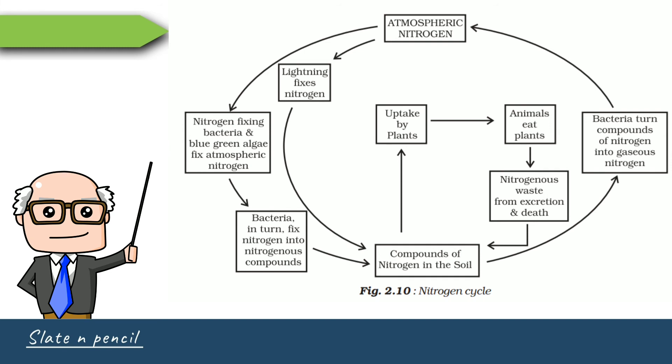These nitrogenous compounds are taken up by plants and utilized during photosynthesis. Animals and humans feed on plants and plant products, and thus nitrogen is transferred to them. When humans or animals excrete, nitrogen goes back to the soil — and that is the nitrogen cycle.